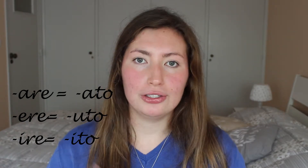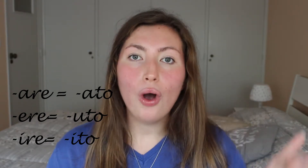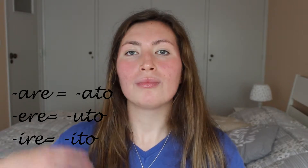Before the participio passato we put the auxiliary at the present tense: io ho mangiato, io sono partito, io ho venduto. What is the passato prossimo of the auxiliary verbs themselves? It's io sono stato and io ho avuto — same structure: auxiliary verb at present tense plus participio passato, which in the case of the auxiliaries is stato and avuto.